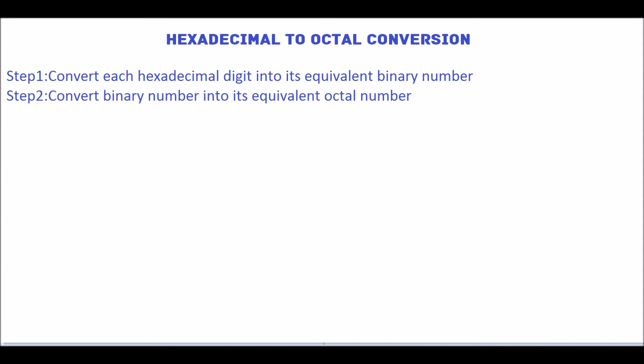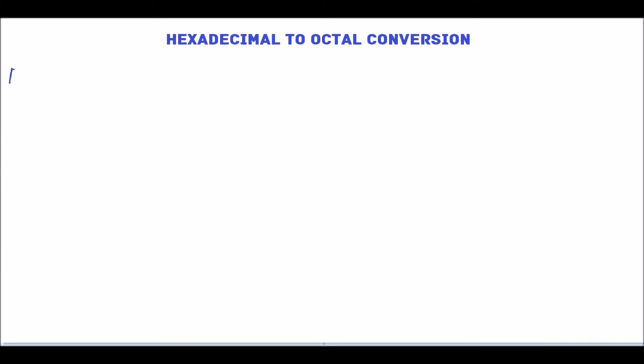Then in step 2, we have to convert the binary number into its equivalent octal number. Let's see how to convert the hexadecimal number A, 8, C.